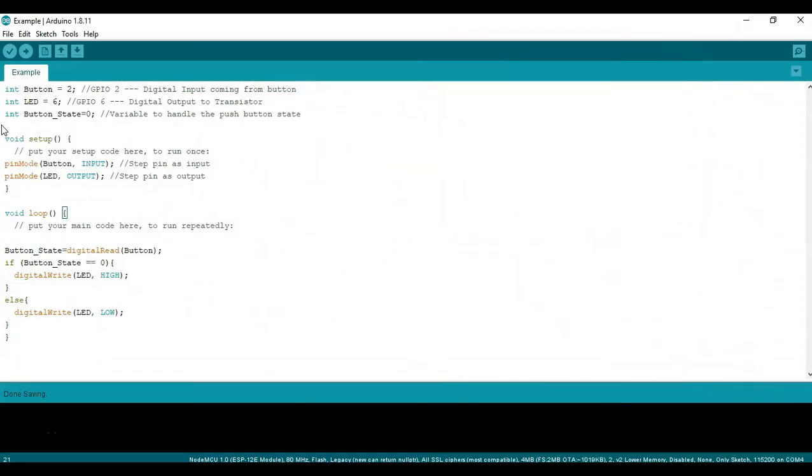Now let's go ahead and take a look at the Arduino code that we'll be using for this example. First, in the first line we see that we identify button pin 2 as an integer which will be the digital input coming from the button. Then we have pin number 6 as LED, which will be the digital output that goes to the transistor, specifically the transistor base. We'll create a variable called button state. We'll set it at 0 to begin with, which will be a variable to handle the push button state. Alright, then we'll define the pin mode for the input and the output. So the button as an input, the LED as an output. And now we'll go ahead and define our logic. So if the button state is high, we'll set the LED to high, so output pin number 6, and otherwise we'll set it to low, which will turn on and off the LED.